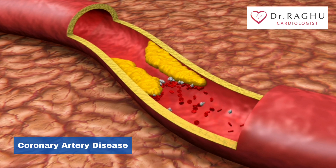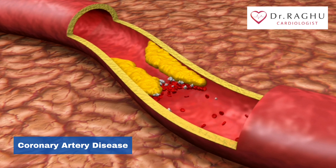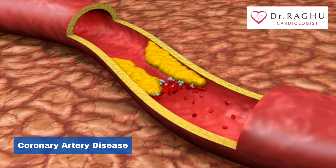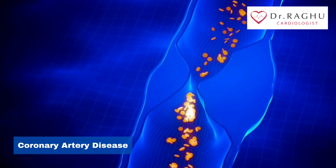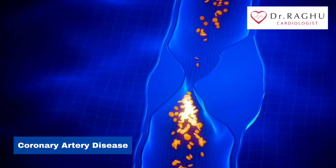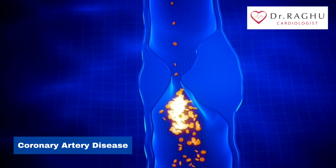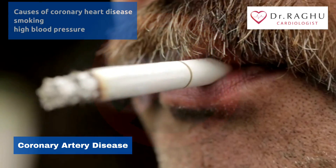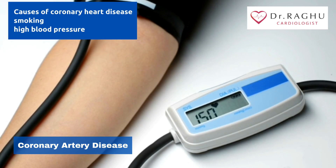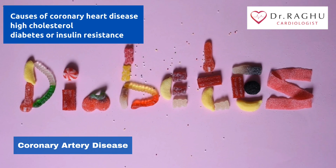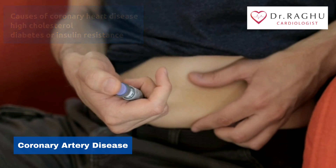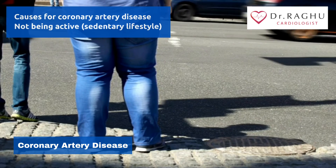Coronary artery disease is thought to begin with damage or injury to the inner layer of a coronary artery, sometimes as early as childhood. The damage may be caused by various factors including smoking, high blood pressure, high cholesterol, diabetes or insulin resistance, and not being physically active.